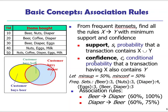We also define confidence. Confidence is the conditional probability that a transaction having X also contains Y. So among all the transactions that purchased X, how many of those also purchased Y — that gives us the confidence of the rule.